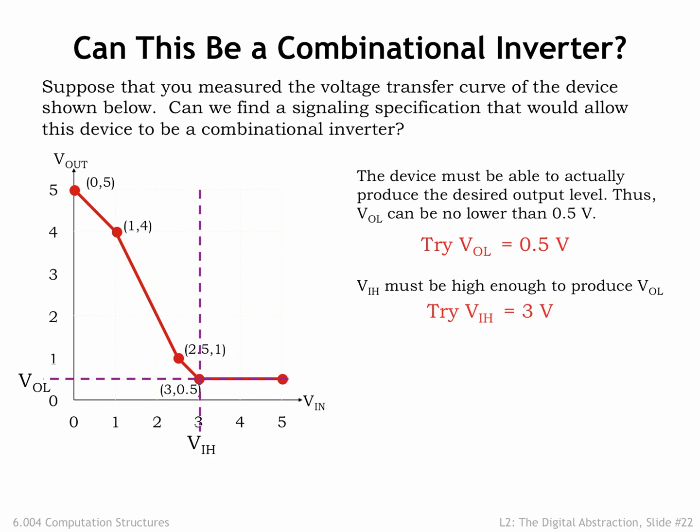We could set it to a higher value than 3V, but we'll make it as low as possible to leave room for a generous high noise margin. That takes care of two of the four signal thresholds, VOL and VIH.